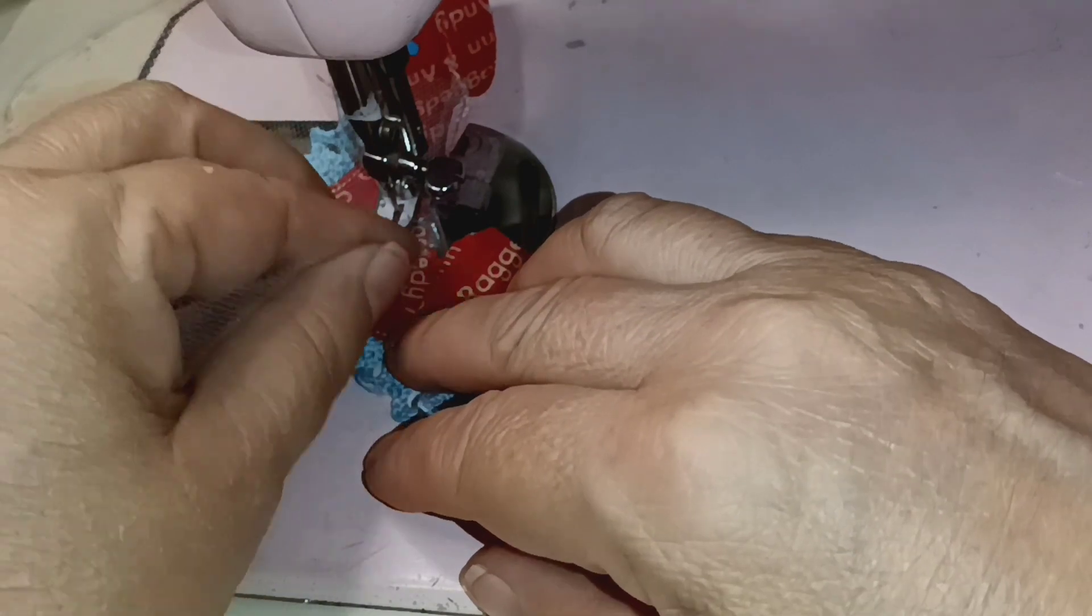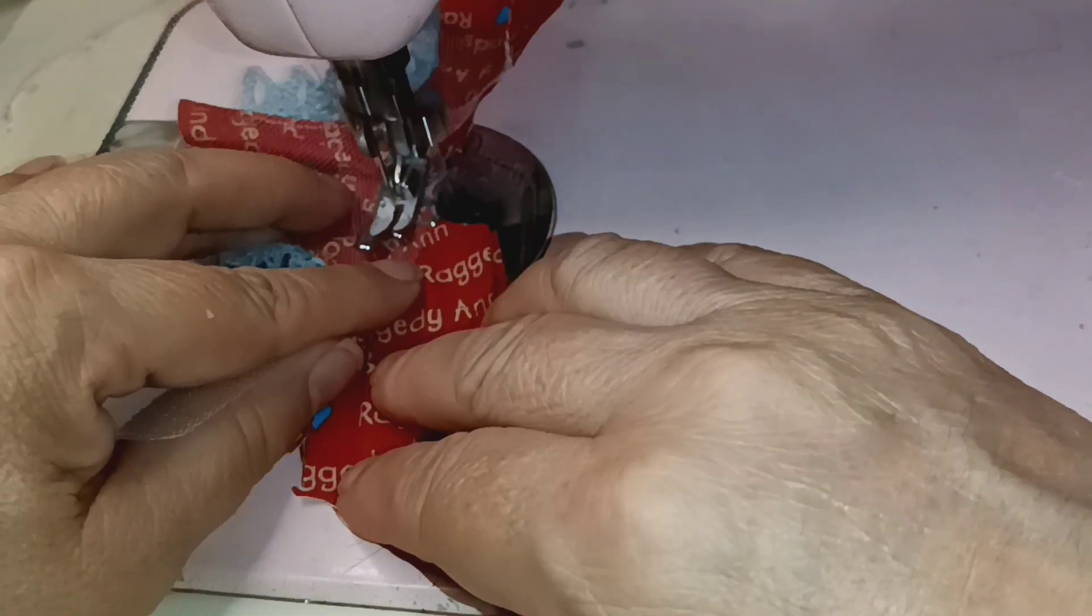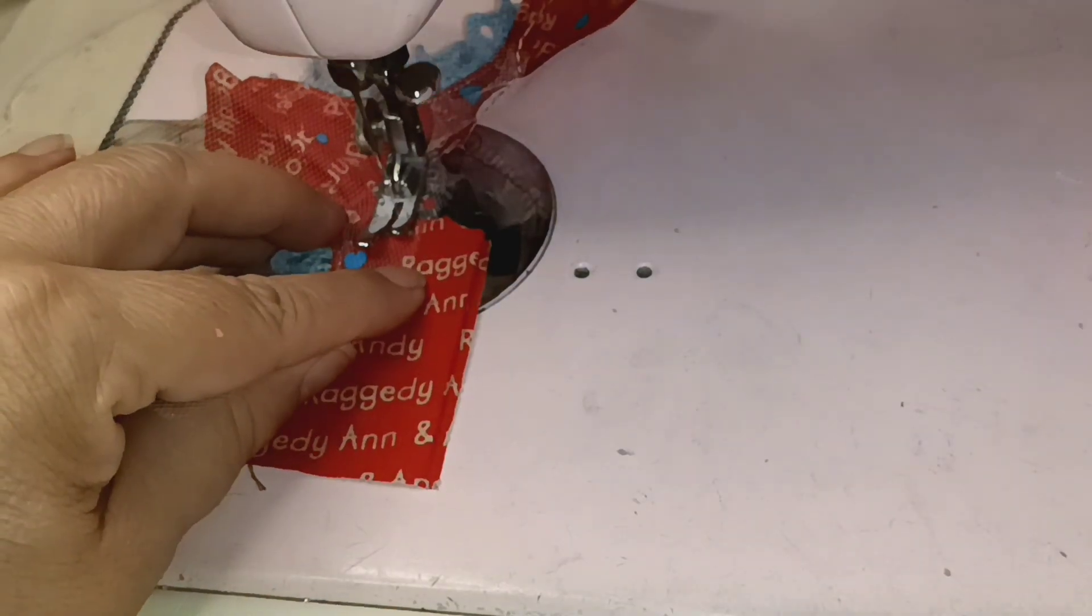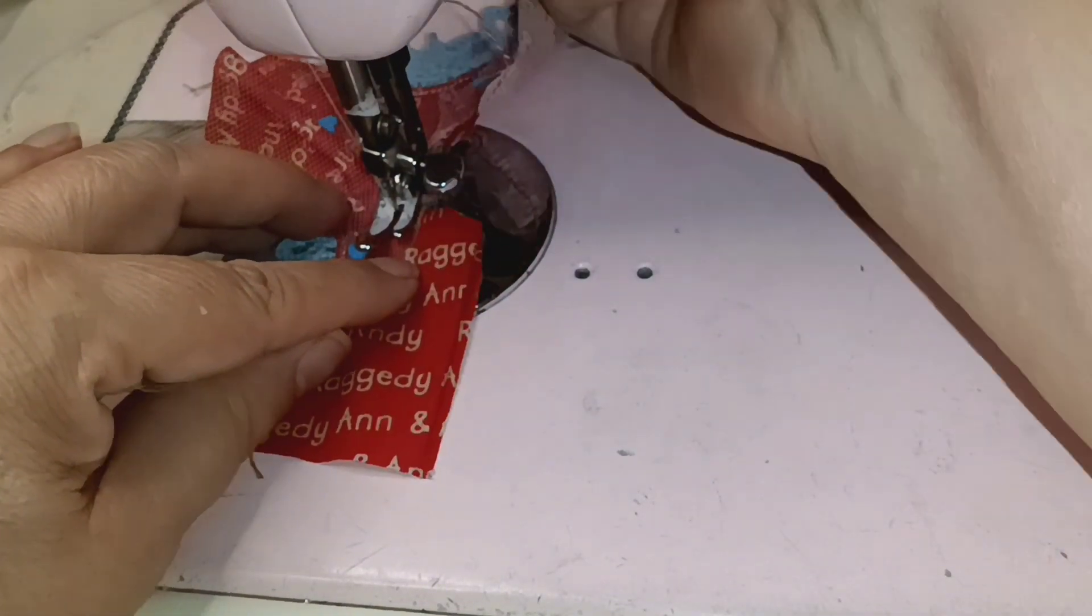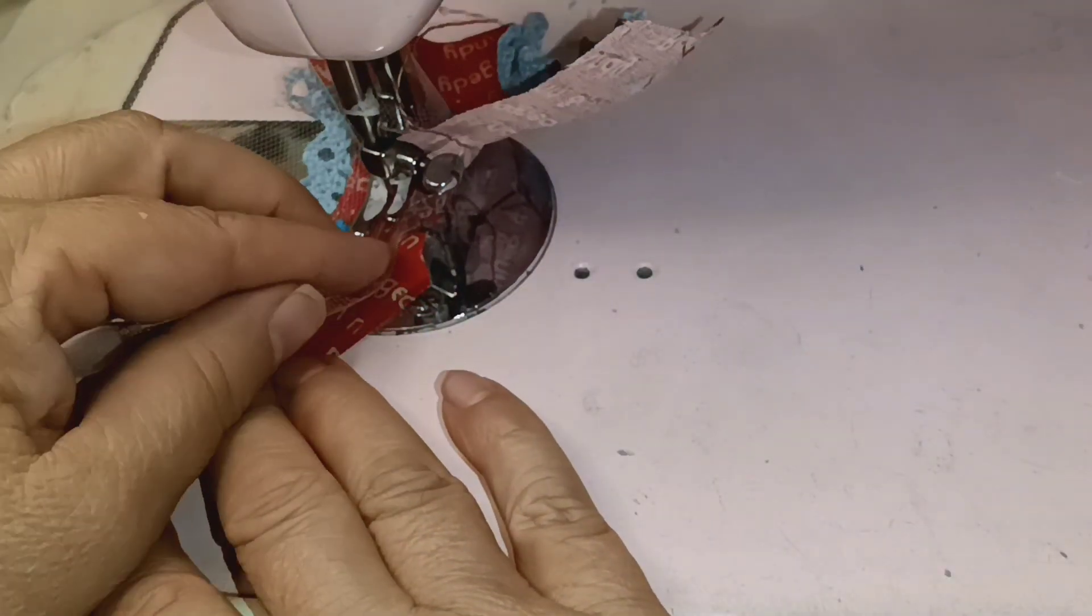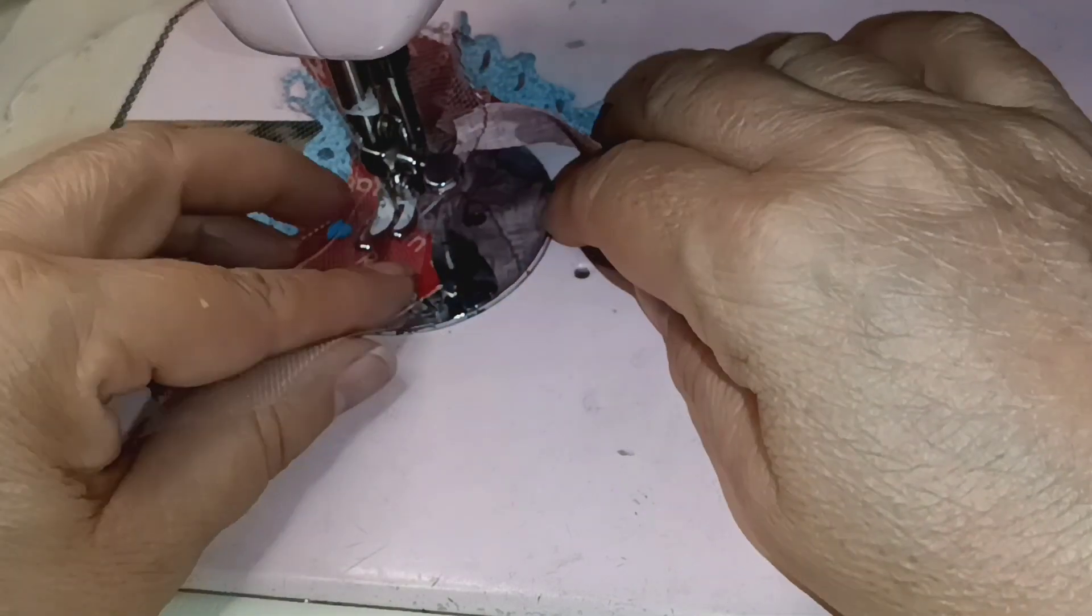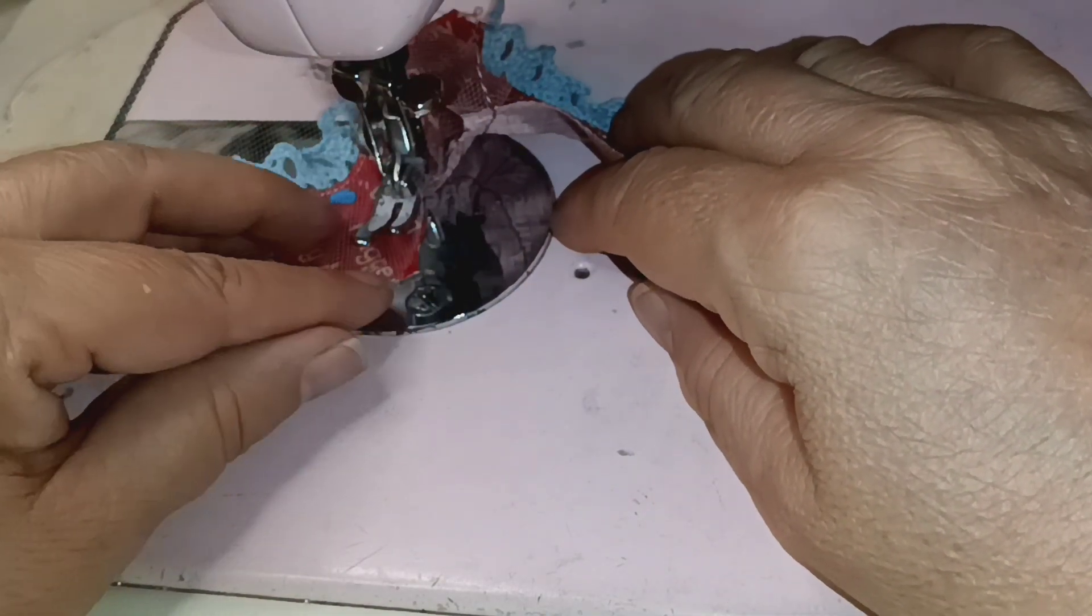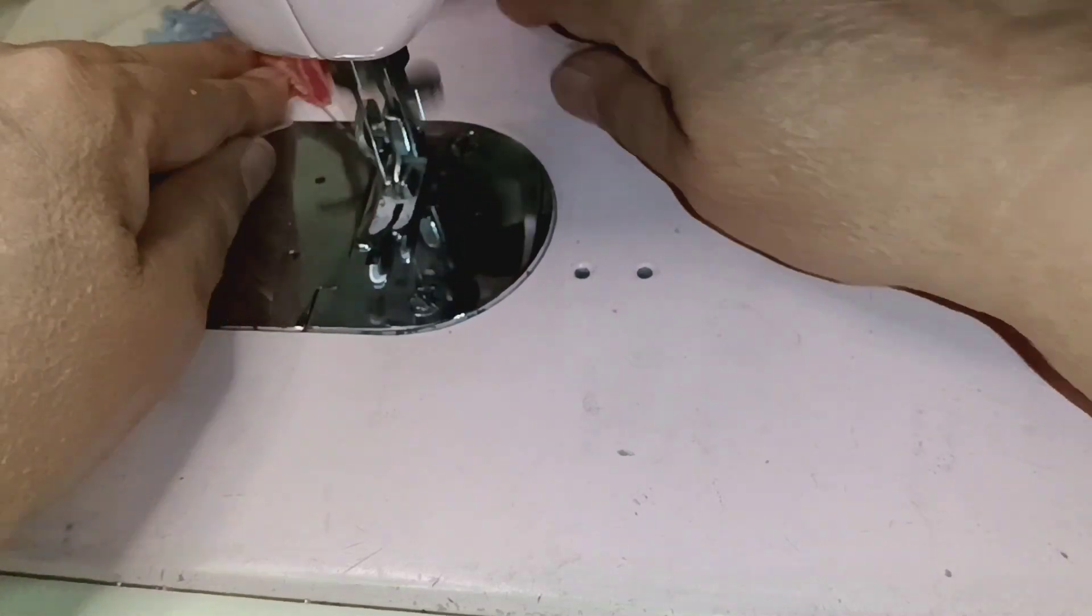Since this is such a small doll, the travel from the back to the front is very short. What I use is the edge of my sewing foot to help me and guide me to make sure that we have equal sewing distance on both sides so it's not lopsided.